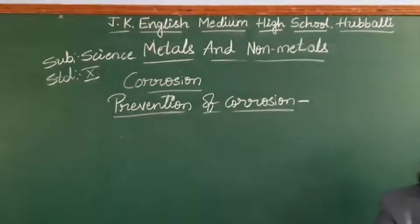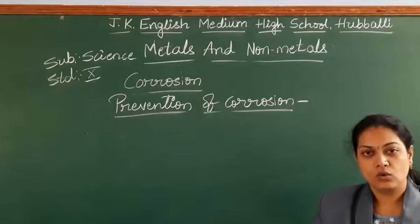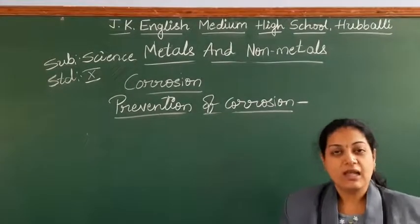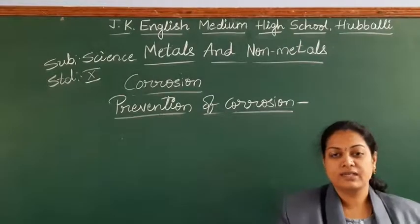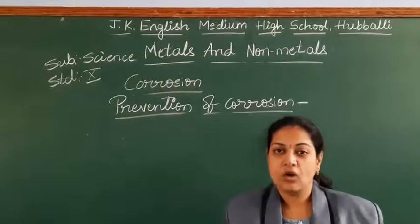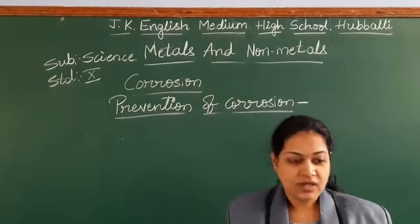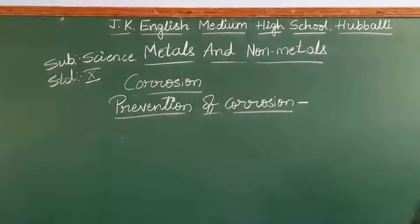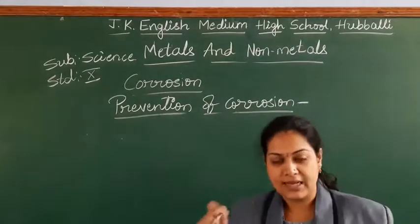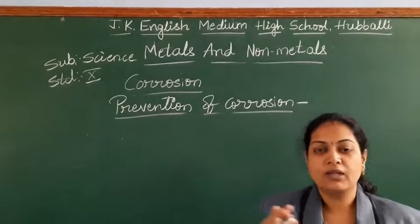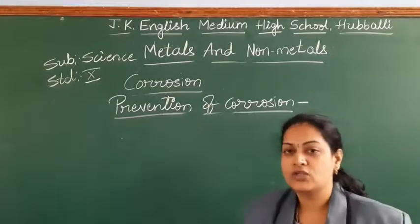Prevention of corrosion: for iron or other metals, we can avoid corrosion by using many methods. The simple one is applying paint — called painting. Applying oil on the metal surface is called oiling. Applying grease is called greasing. It may also be by electroplating, by galvanization, or by making an alloy. There are so many methods, and depending upon the nature of the metal, we can apply the appropriate method.